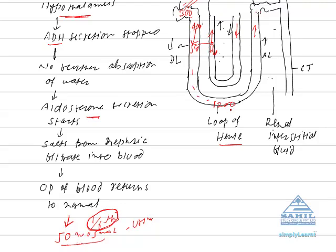The ascending limb is permeable to salts but not to water. So the osmotic concentration of the nephric filtrate decreases — from 1200 down to 800, 600, 500 — and at the level of the DCT it becomes 300 again, making it isotonic.